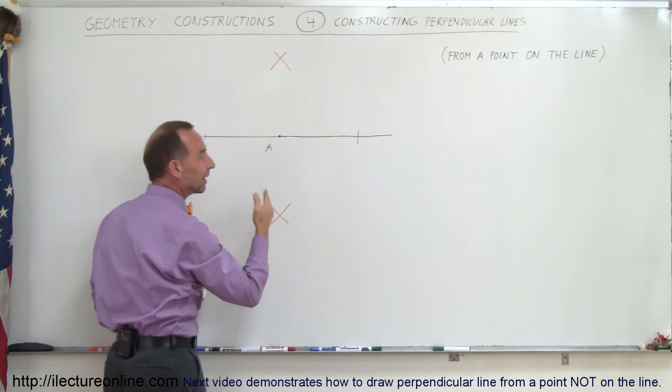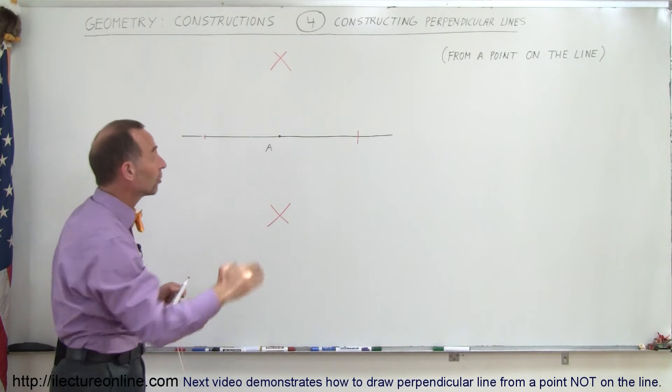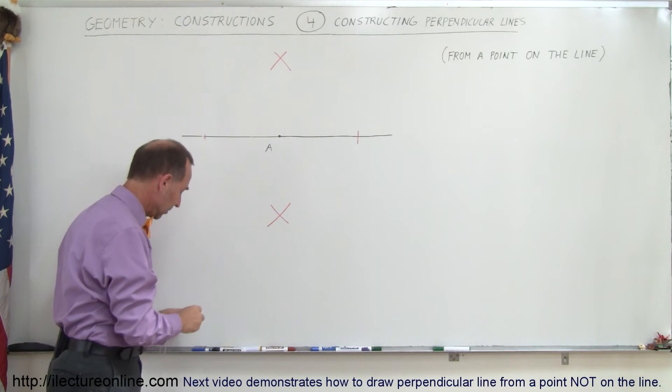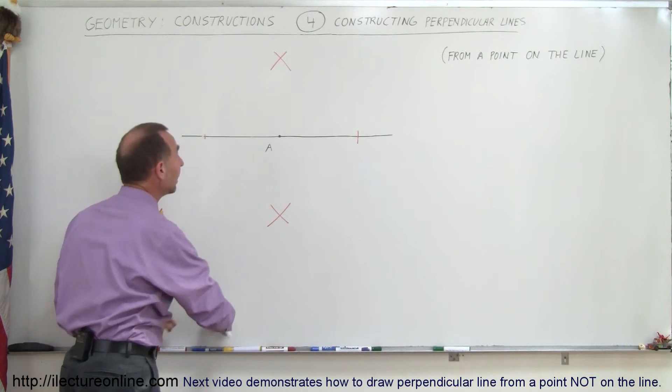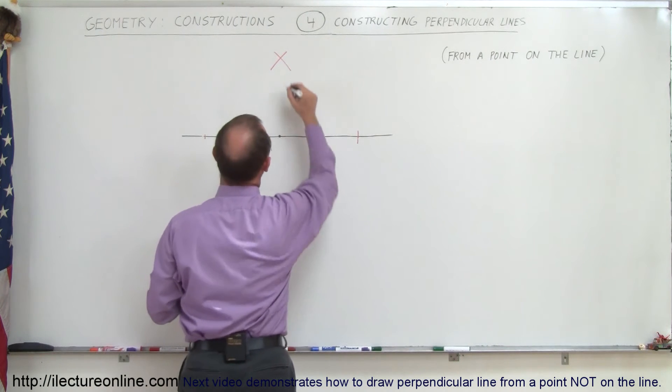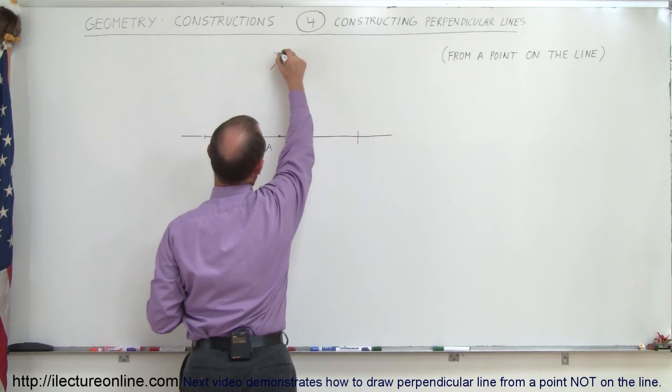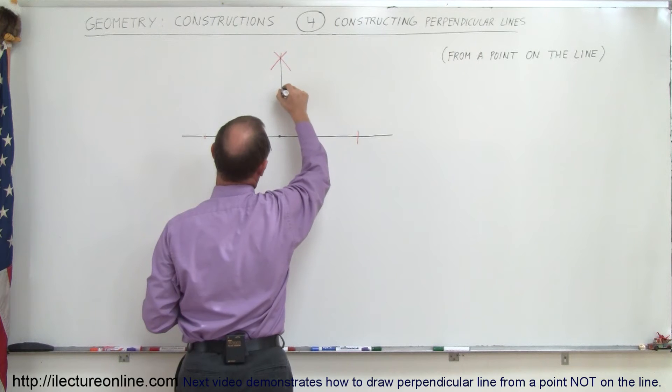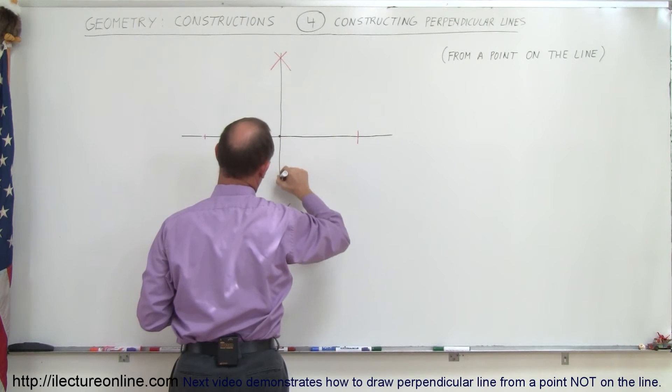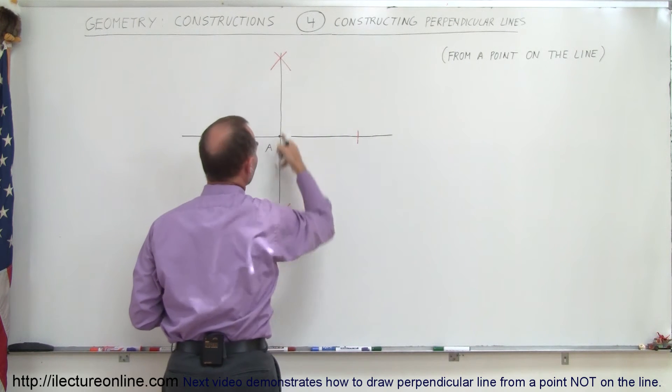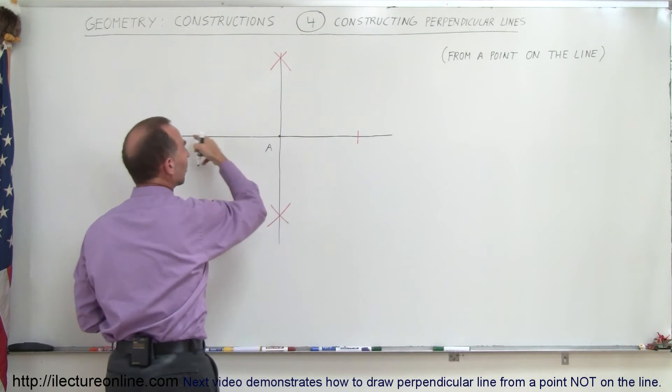Those should all be exactly on a line that's perpendicular to my first line. If I grab my black pen and connect all those dots, I can draw one line through here, through point A, and through my point there. This line is therefore perpendicular to this line.